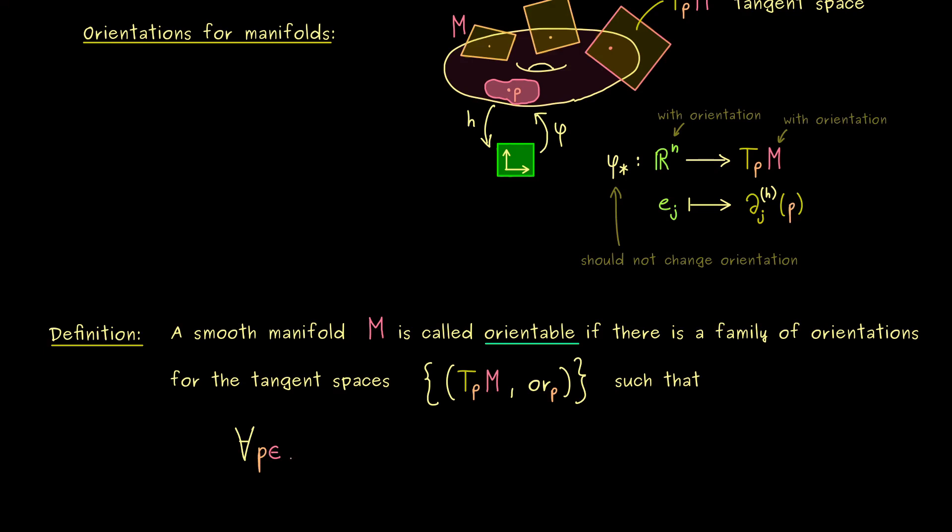In other words, for every point P, we only have to find one chart. And let's call the chart UH as always. And then this chart should give us a coordinate basis that is positively orientated. More precisely,